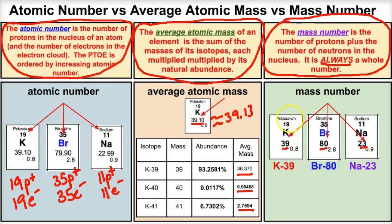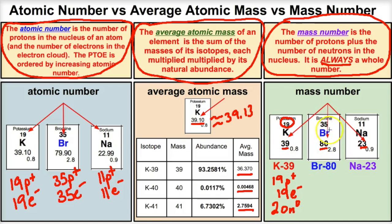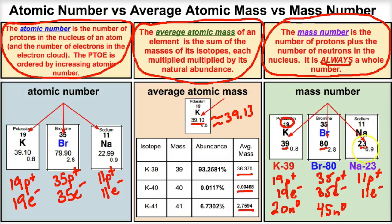To figure out the number of protons, neutrons, and electrons: the atomic number gives you protons and electrons. To get neutrons, take the mass number minus the atomic number. For potassium: 19 protons, 19 electrons, and 39 minus 19 equals 20 neutrons. For bromine: 35 protons, 35 electrons, and 80 minus 35 equals 45 neutrons. For sodium: 11 protons, 11 electrons, and 23 minus 11 equals 12 neutrons.